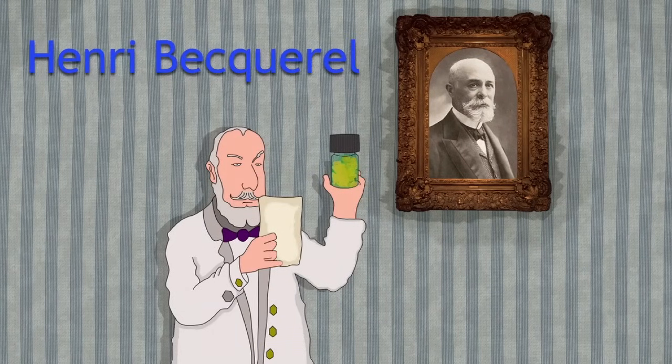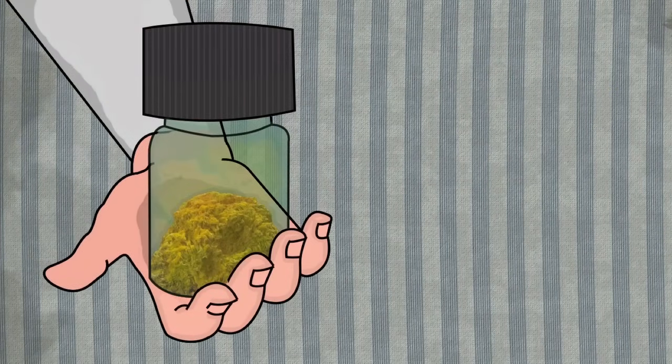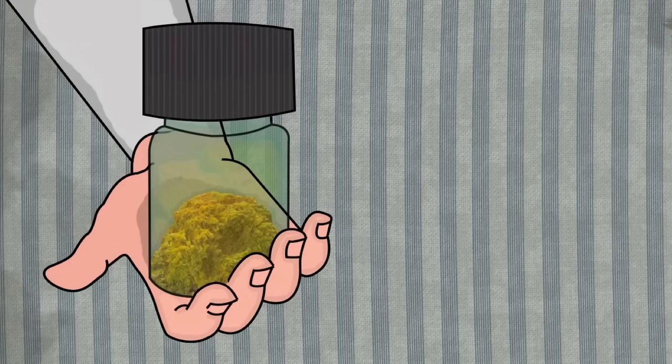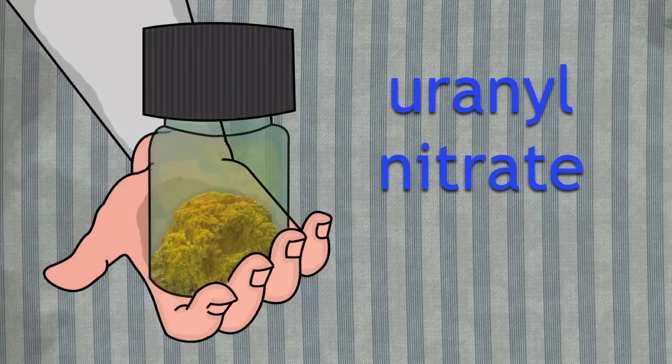In 1895, Henri Becquerel, he's the man with the moustache, discovered that rocks of uranium affected photographic paper. This is the rock of uranium that he looked at, and it's called uranil nitrate. If you look at it, you can see it's yellow.